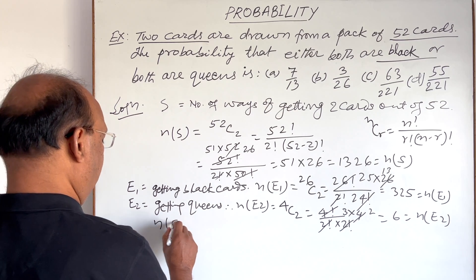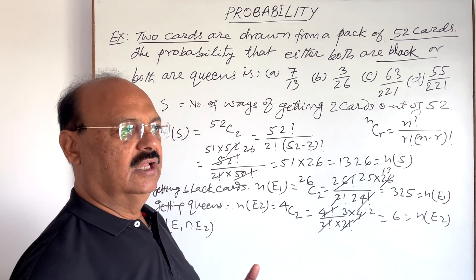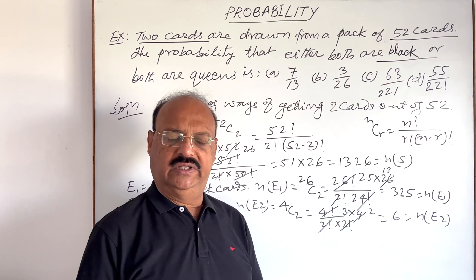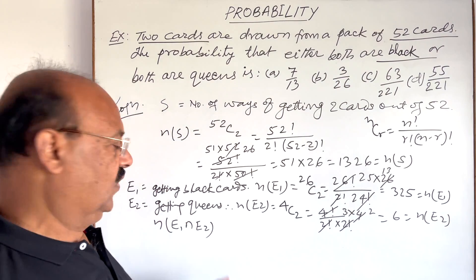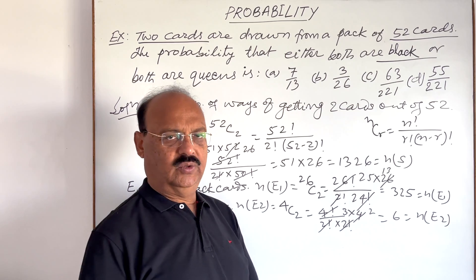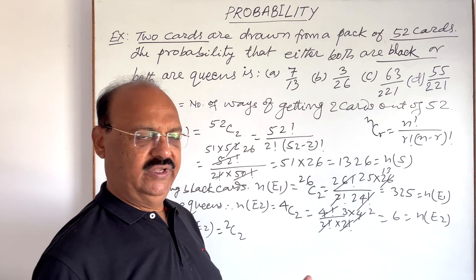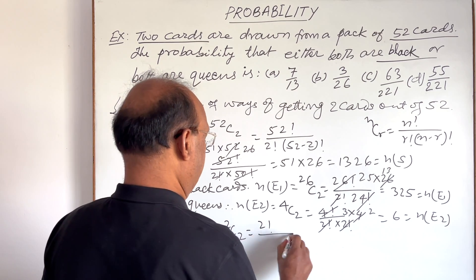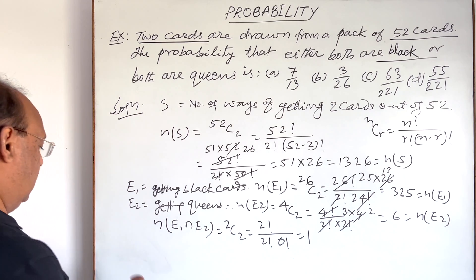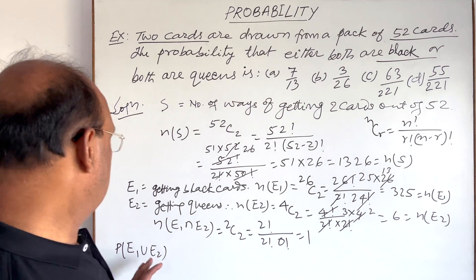We also need to find n(E1 ∩ E2), the case where both cards are black as well as queens. There are exactly two cards that are both black and queens — the queen of spades and queen of clubs. So n(E1 ∩ E2) = 2C2 = 2! / (2! × 0!) = 1.